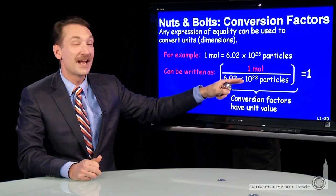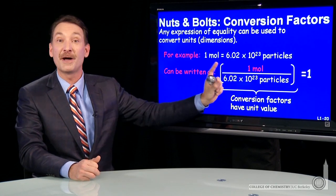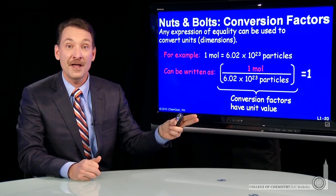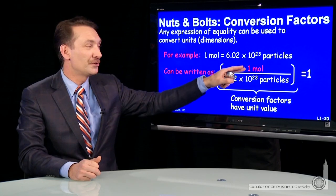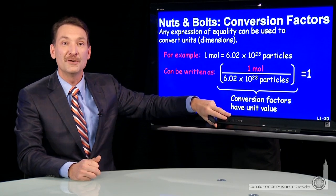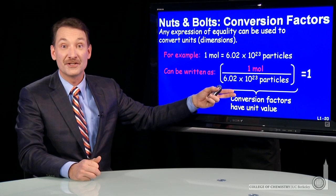I can take this that has value of 1 and multiply it. It's the multiplicative identity, 1. I can multiply it by anything and not change the value, but the units will change. So I can use conversion factors to change my units or dimensions from one unit or one dimension to another.